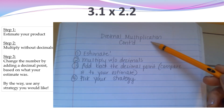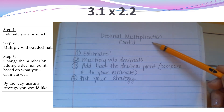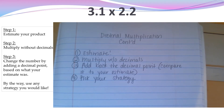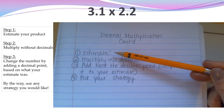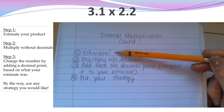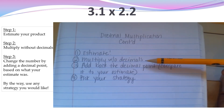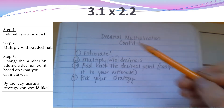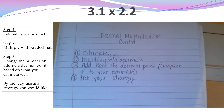Take some notes. Up at the top here I wrote 'decimal multiplication continued.' You see those four steps I have written on the slide? I want you to jot those down in your notes. I sort of simplified the steps. Step one is to estimate. Step two is to multiply without decimals. Step three, you're going to add back the decimal point in your product by comparing it to your estimate. Step four, you get to pick your strategy.